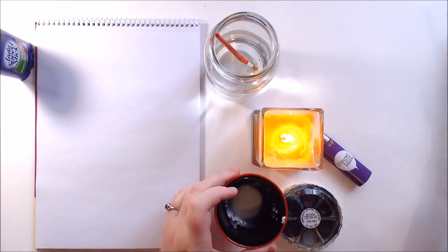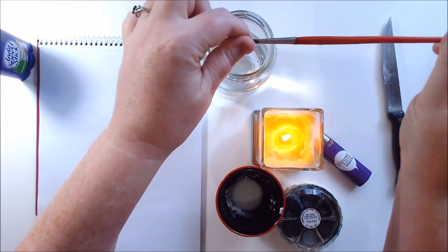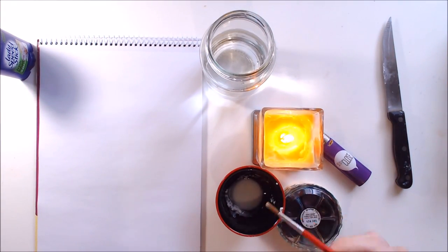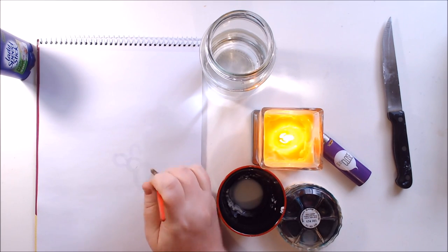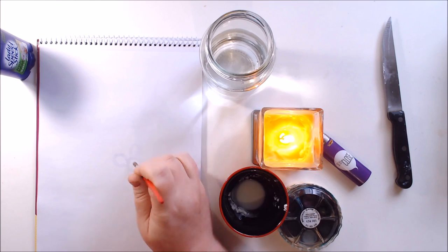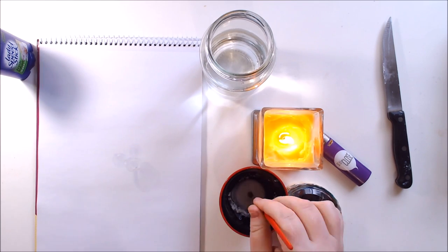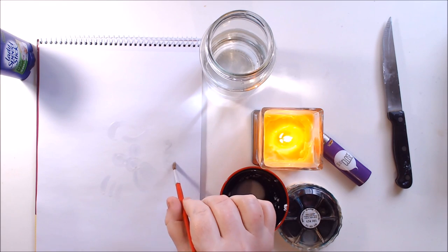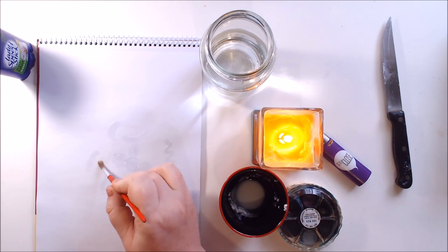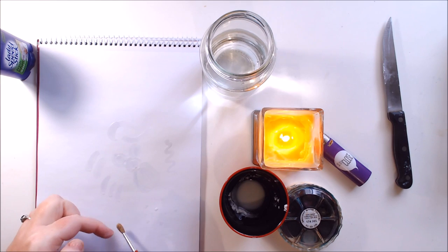And then once it's all liquidy you just need to grab an old brush, one that you don't really care about and use that to paint where you want your resist to be. So let's start with a little bunny that I would paint him first and then I'm just going to do little patterns and designs all around him because I want to test out all the different colors of my watercolor to see how well this goes.